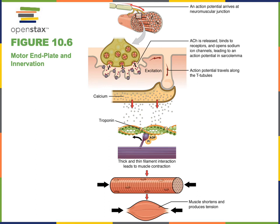A motor unit is an individual motor neuron and all of the muscle fibers that that motor neuron excites. One motor neuron's axon can branch to form multiple neuromuscular junctions. When an action potential travels down the axon of a motor neuron, it will stimulate contraction of all of the muscle fibers in that motor unit.